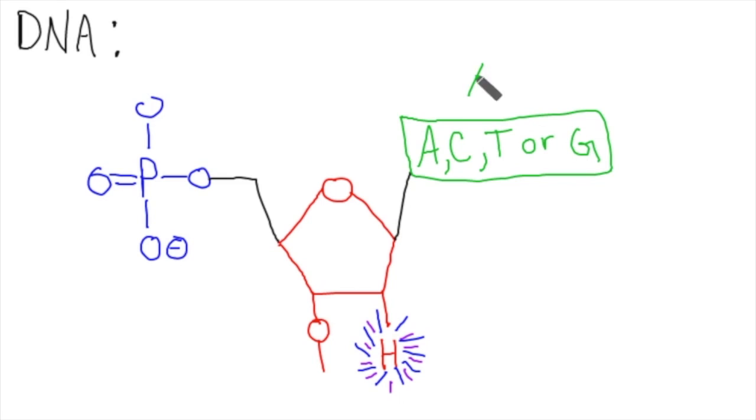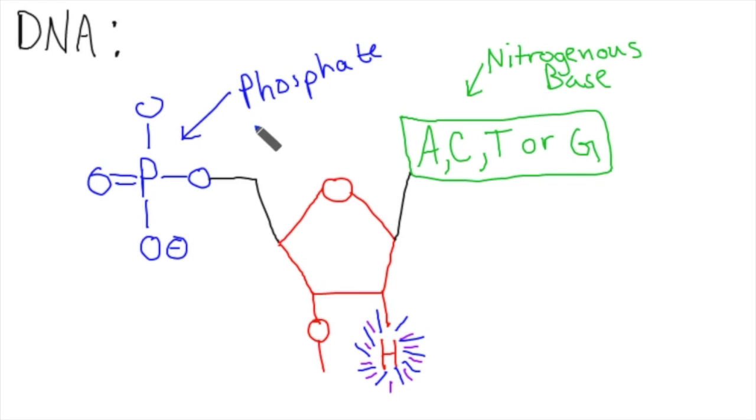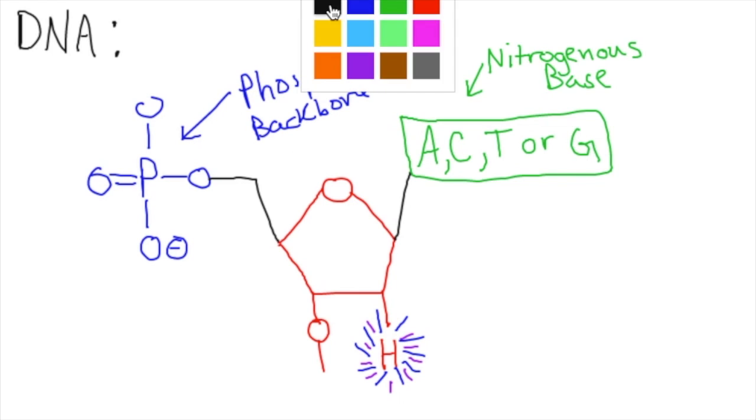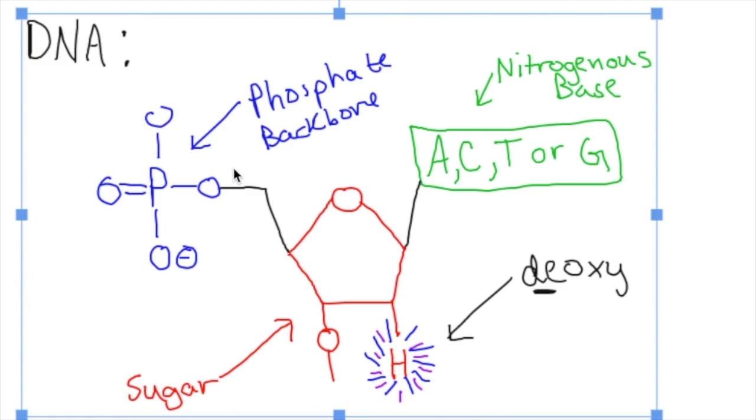So back to the hydrogen. If you remember, the DNA is called deoxyribonucleic acid. And in Latin, D means without, and the oxy part is referring to the oxygen. So this is saying that in comparison to RNA, DNA does not have an oxygen at that place.